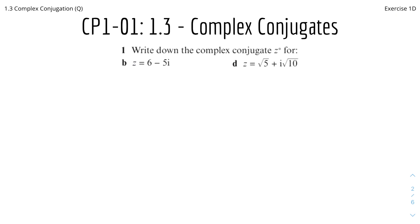These questions are from the Core Pure 1 textbook, Exercise 1D, so you can check it out. So 1B: write down the complex conjugate Z asterisk of Z for B, where Z equals 6 minus 5i.